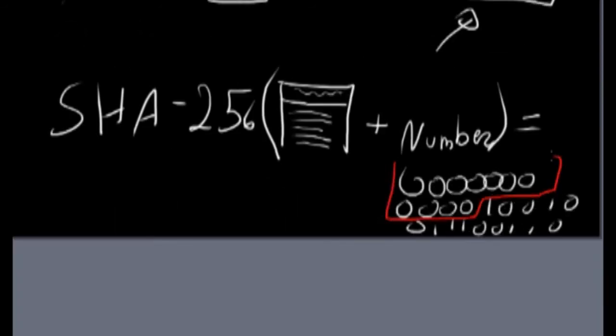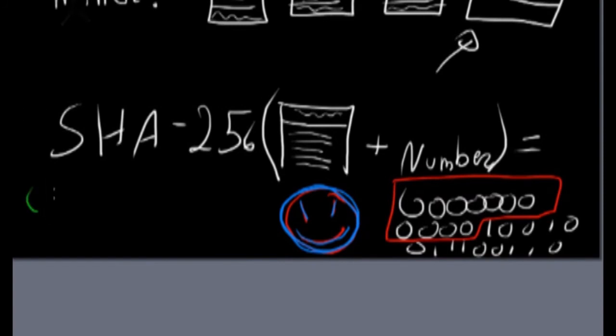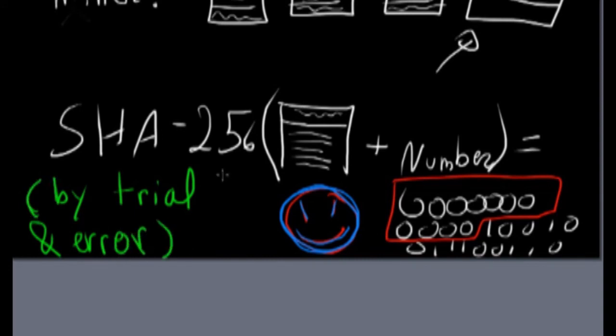And since this function is unreversible, the miner can only find this by trial and error. And this is why it requires such a big amount of computational power.